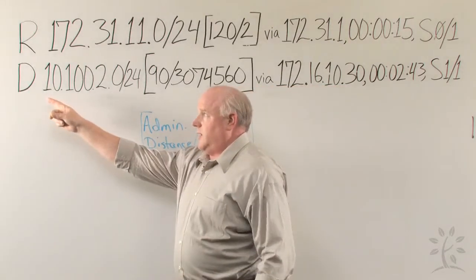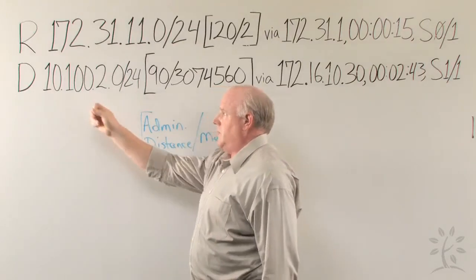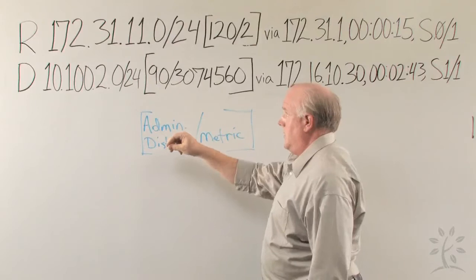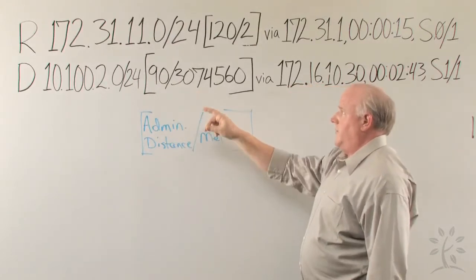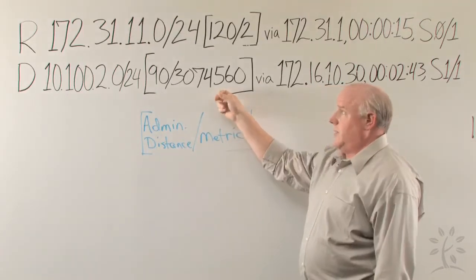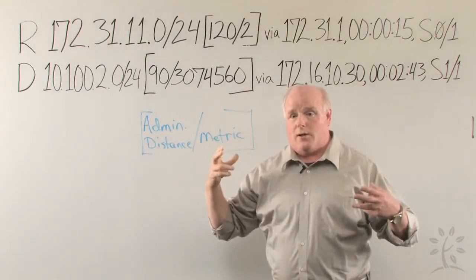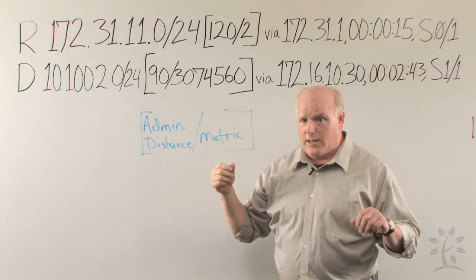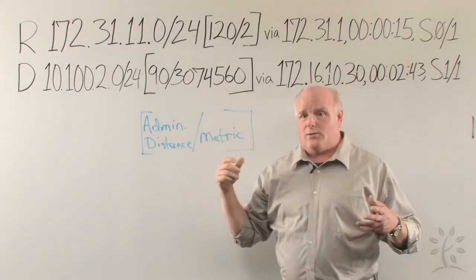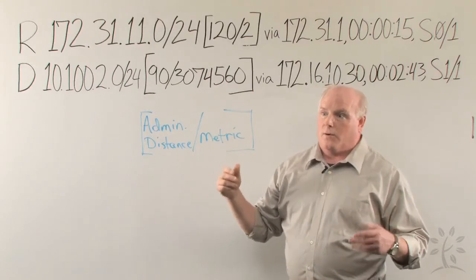So using the EIGRP protocol, there's a route to this network with an administrative distance of 90 and a routing metric of 3074560. Big numbers. Now, we don't need to worry about the metric, because there are many more calculations going on in the background for EIGRP, and each protocol is going to have a metric that comes out just a little bit differently, or considerably different.